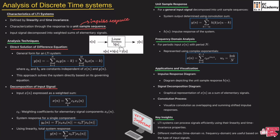Here we are considering the linear time invariant system with the response H(N). H(N) is the response of the LTI system. Specifically, if we take the input as an impulse sequence, this response is known as the impulse response. The output of the system Y(N) can be given as X(N) convolved with H(N), where star represents convolution.